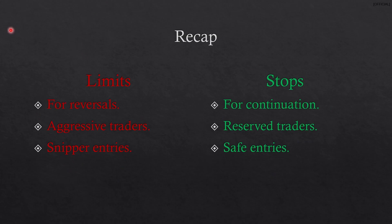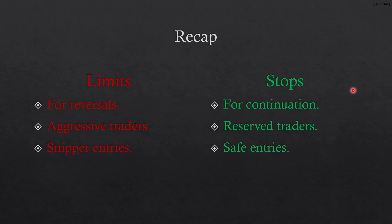Quick recap: limits are for reversals — you're expecting price to reverse after it touches a certain point. This is for aggressive traders and it will give you sniper entries. Stops are for continuation — you're saying that if price passes a certain point it will continue going in that direction. This is for reserved traders, and as a result you're going to get safer entries compared to limits.